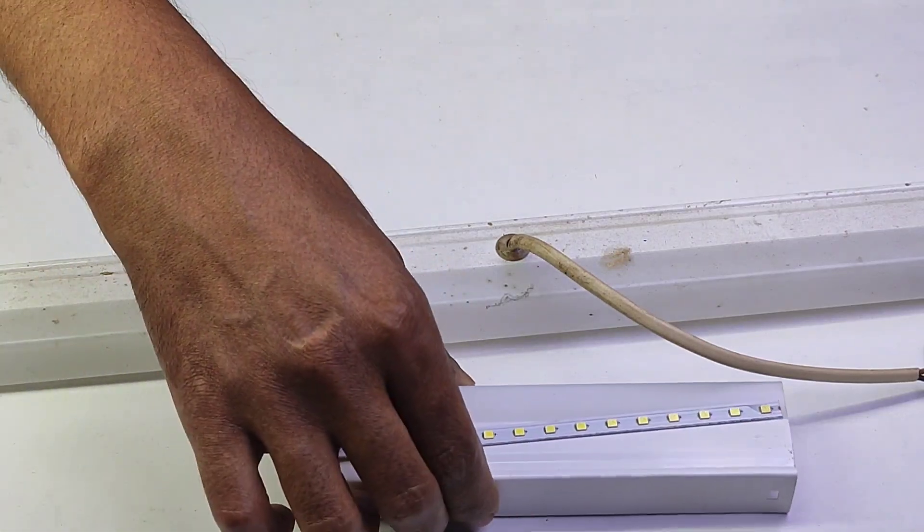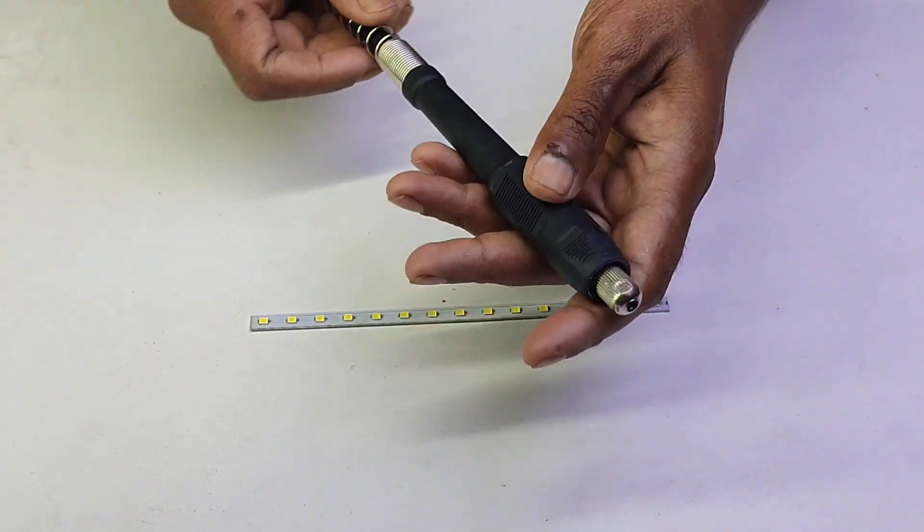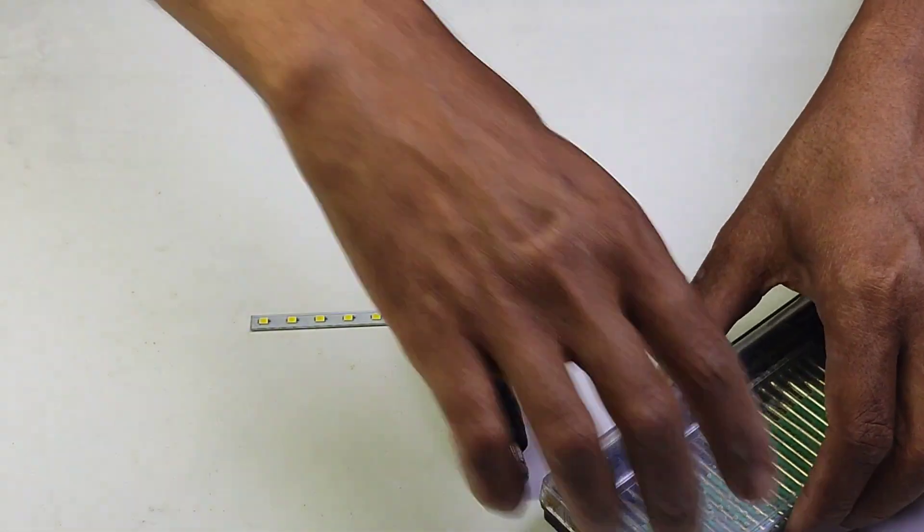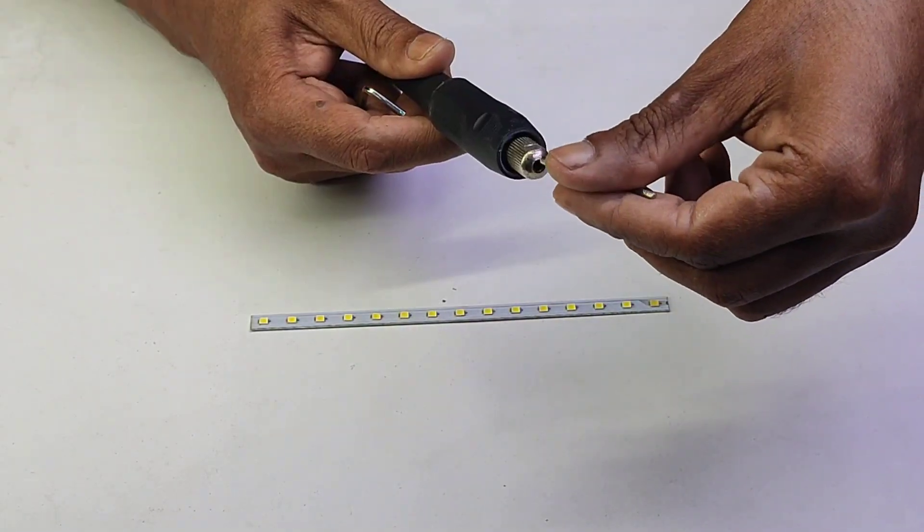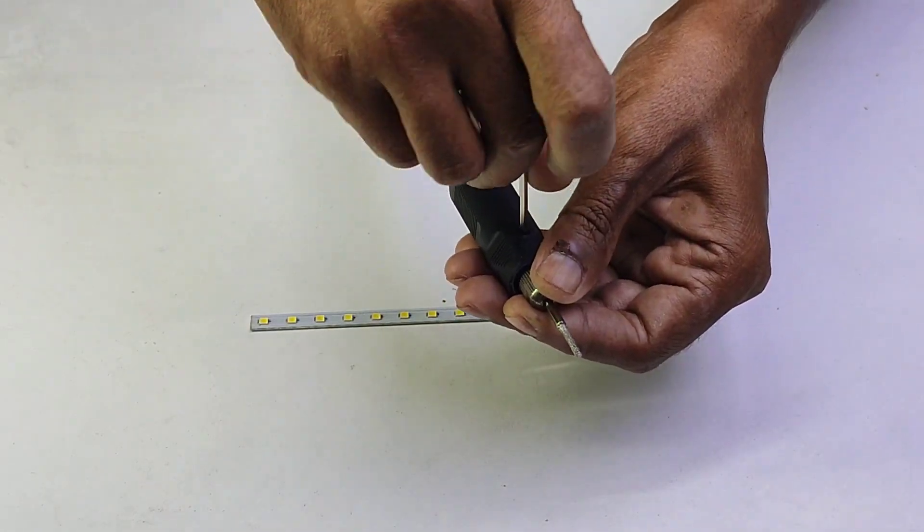I'll use my DIY rotary carver to modify the LED strip, changing the connections from series to parallel. I am using the rotary carver because I have it, but this can easily be done with a knife, screwdriver, or a similar tool.